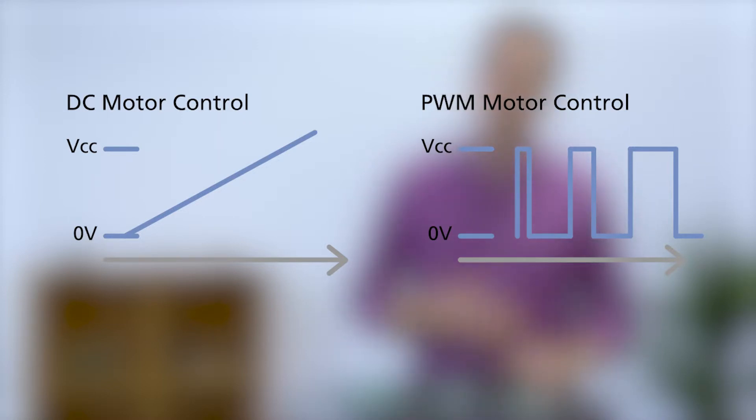PWM is essentially turning on and off the motor rapidly, and the duty cycle of the PWM waveform is proportional to the average energy contained in the pulses. Soft-start works like this.